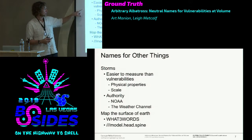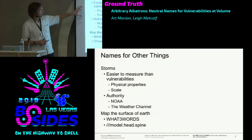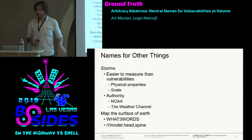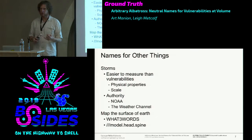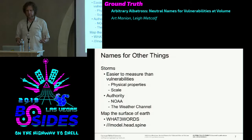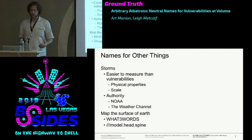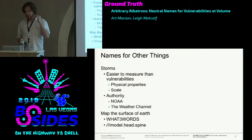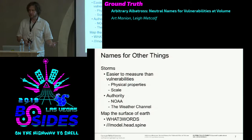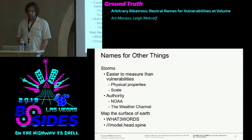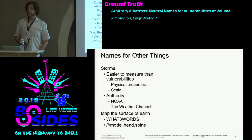We name other things. We name storms. I claim they are easier to measure than vulnerabilities because they're physical—you can measure wind speed and pressure and temperature. Conceptually easier to measure, maybe not physically easier. You measure physical properties, have an objective measure: it's a tropical storm, it gets a name; it's a hurricane, it gets a name. NOAA in the US does this, and the Weather Channel names things as well, probably for promotional purposes.